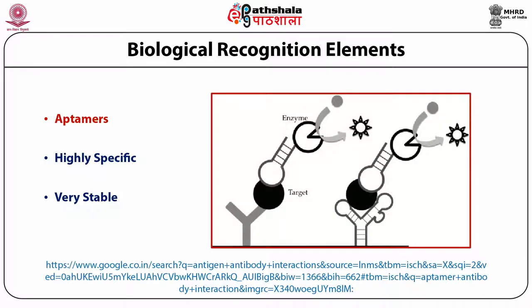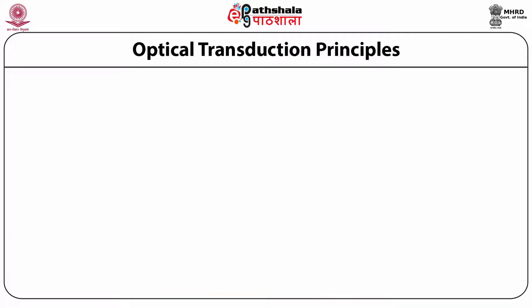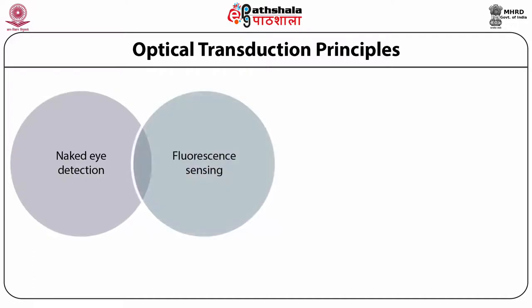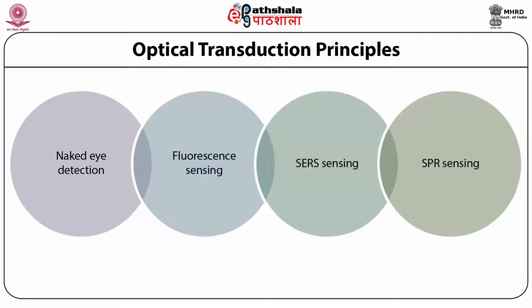Shown in the figure is an example of an antibody versus an aptamer. On the left is a Y-shaped gray colored primary antibody with the target and a secondary antibody — compared to an aptamer on the right, where both primary and secondary antibodies are replaced by aptamers. Just like electrochemical transduction outputs were in the form of electrical conductivity, impedance or resistance, there are various optical transduction principles broadly classified into four: naked eye detection, fluorescence sensing, SERS sensing — surface enhanced Raman spectroscopy — and SPR, surface plasmonic resonance sensing.